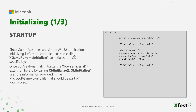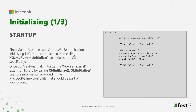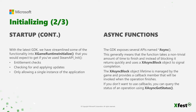Once you've done that, initialize the Xbox Service SDK extension library by calling xblInitialize. xblInitialize uses the information provided in the Microsoft game config file that should be part of your project. With the latest GDK, most of the functionality of Steam API will be handled by the bootstrapper. This includes the entitlement check, checking if the user owns the title, checking for and applying updates — this applies to both required and not required downloads — and limiting the game to a single concurrent process.